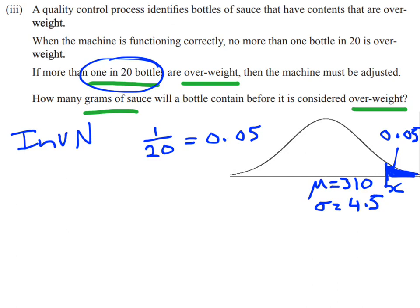So under our inverse normal distribution, we've first of all got to say what kind of tail it is. And you can see on the diagram there, I've shaded in the tail on the right-hand side. So we've got a right tail.